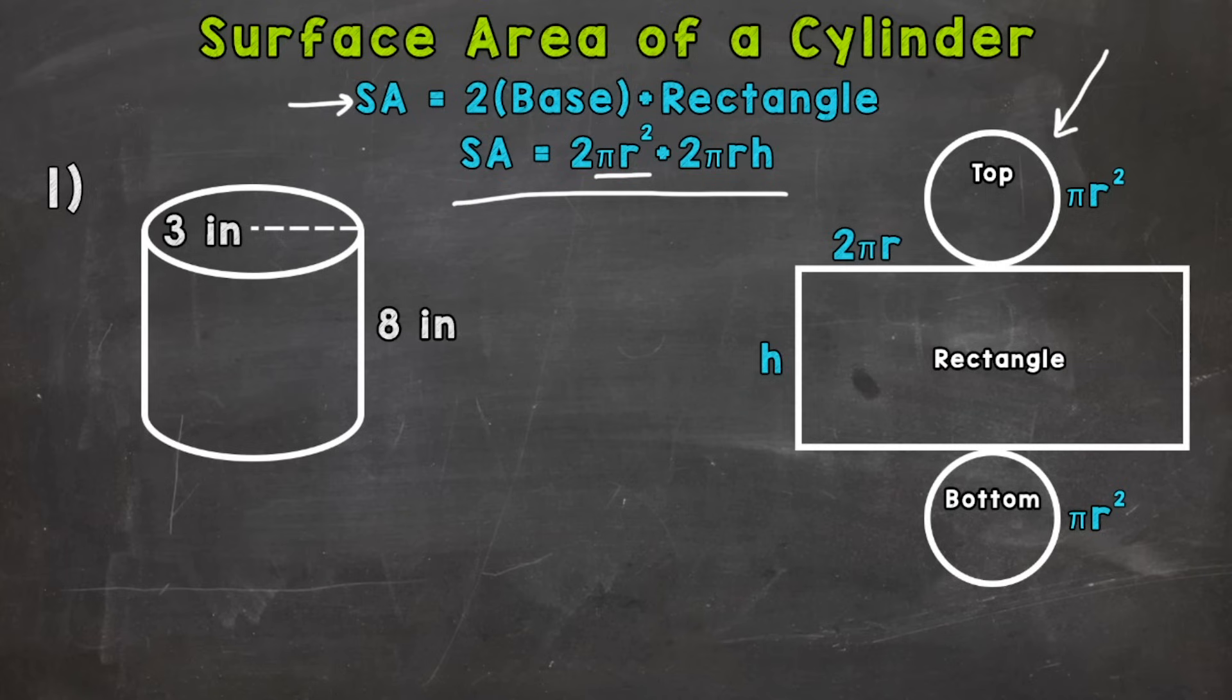And then we have 2πrh. So 2πr, that is the formula for the circumference of a circle. So let's take a look at this rectangle within our net.